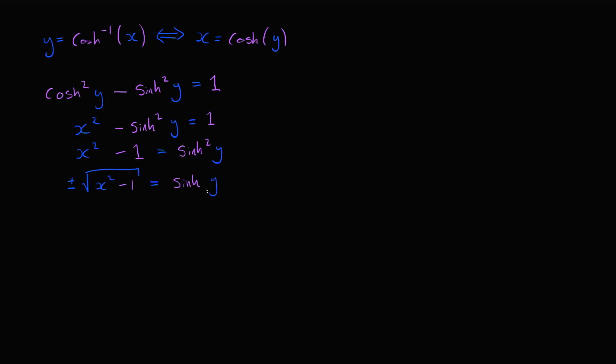Next, we're going to substitute our expression for sinh of y into the sum identity. So cosh of y is just x, and sinh of y is just plus or minus the square root of x squared minus 1, and this is equal to e to the y. We can then take the natural log of both sides, and the natural log and the e will cancel each other out, and we'll just get y.